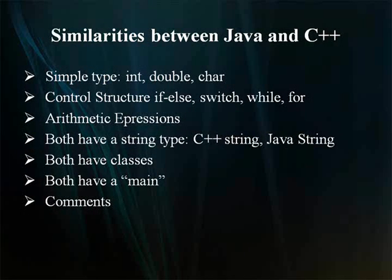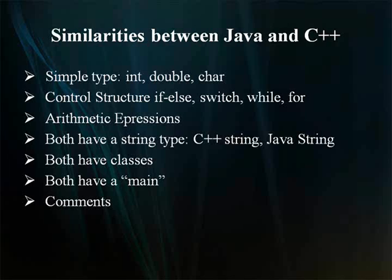Now we will see what are the similarities between Java and C++. They share simple types such as int, double, and char. They share the same control structures: if-else, switch, while, and for. Both support arithmetic expressions. Both have a string type — C++ string and Java string. Both have classes and a main function.